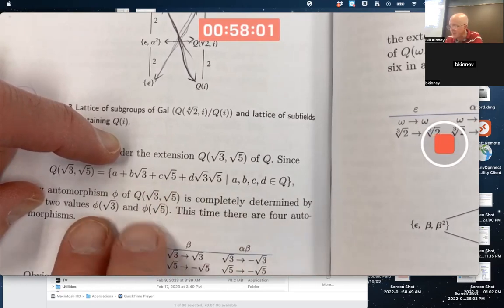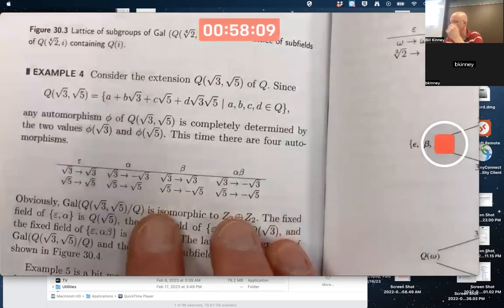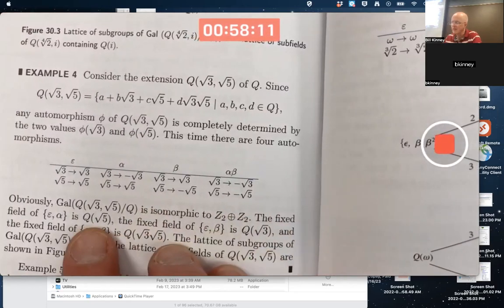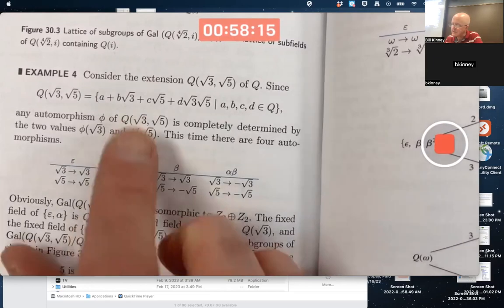So if you know these values, you're going to know all possibilities. The author claims there's four automorphisms by thinking about what the possibilities are for these things, root 3 and root 5.